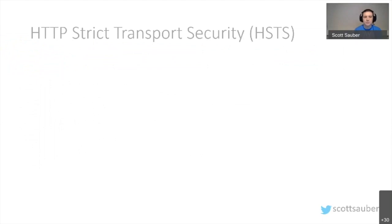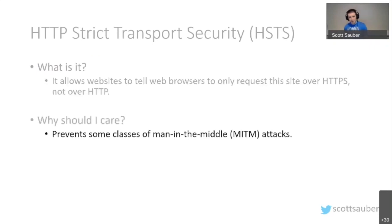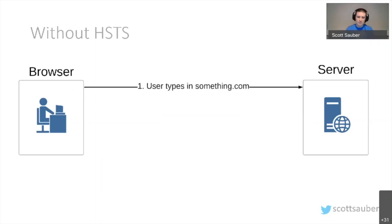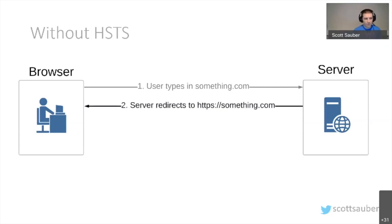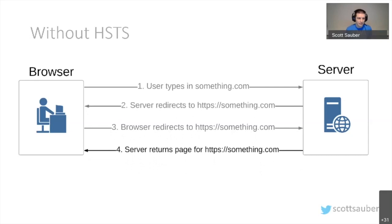The first security header is HTTP Strict Transport Security, or HSTS. It allows websites to tell web browsers to only ever request the site over HTTPS — never over HTTP. It prevents some classes of man-in-the-middle attacks. Without HSTS, when a user types something.com without HTTPS, that request goes all the way to the server, and the server redirects to HTTPS. But that initial HTTP request over a compromised Wi-Fi access point can be intercepted by a man in the middle who serves up malicious content.